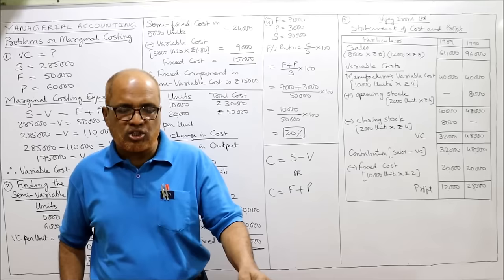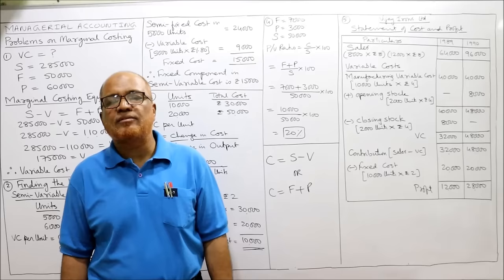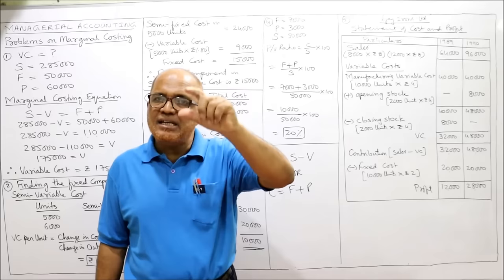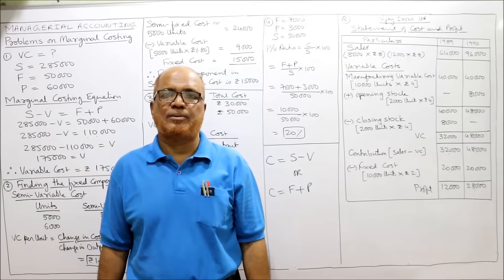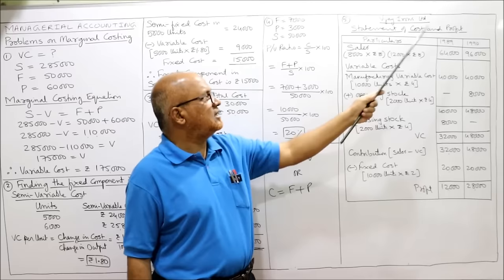We prepare a cost statement assuming the company uses marginal costing technique. Under marginal costing: sales minus variable cost gives contribution; contribution minus fixed cost gives profit. That is the marginal costing equation.